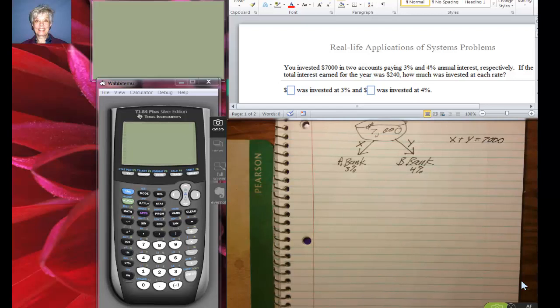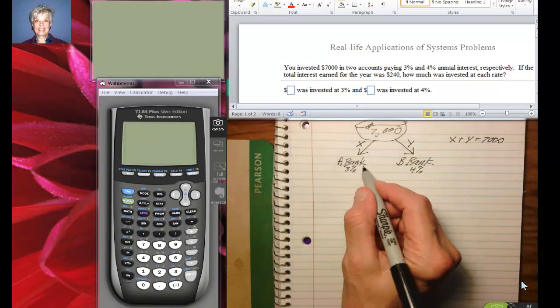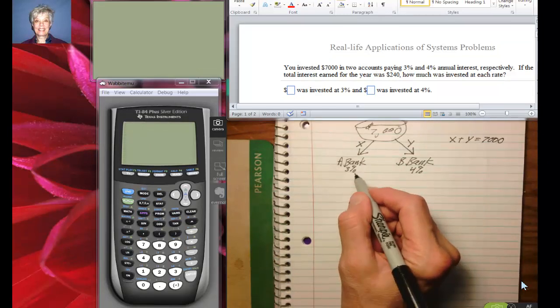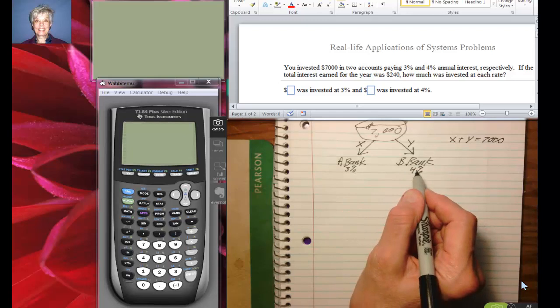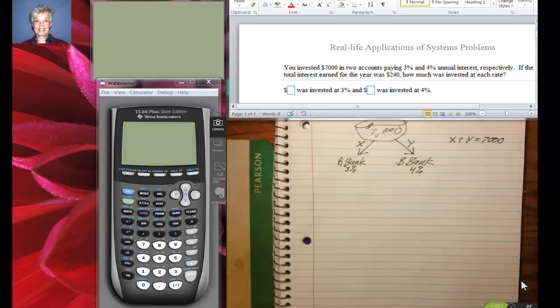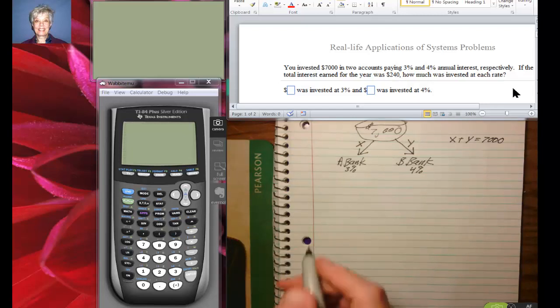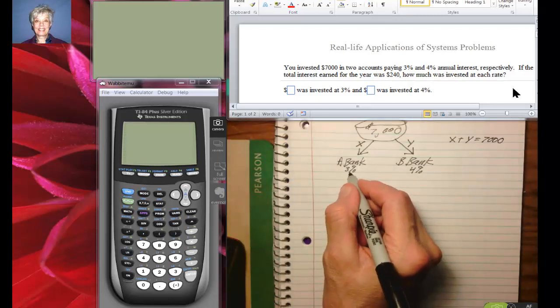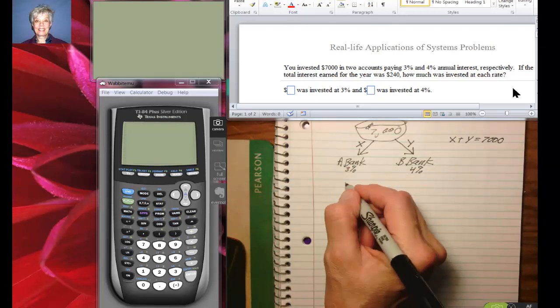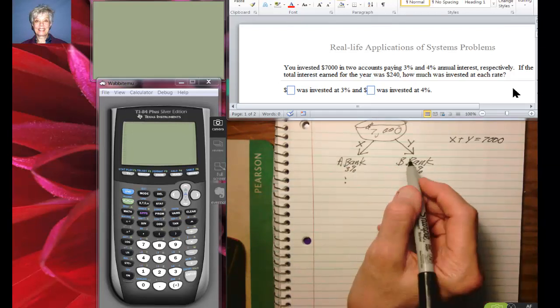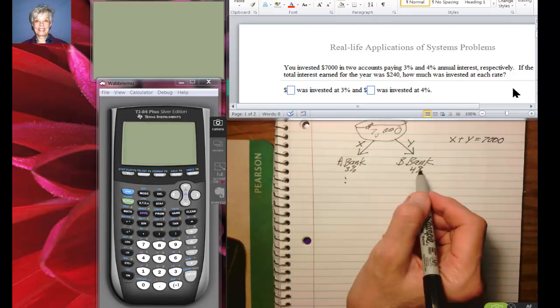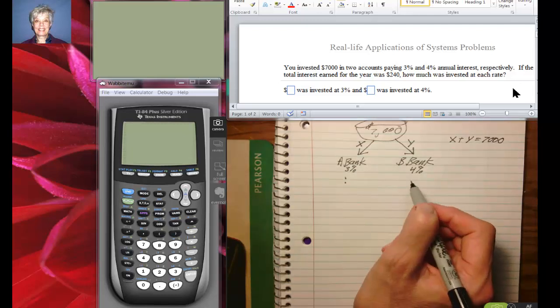Now what are we told? We're told that at the end of the year, your money in here which earned 3% plus your money in here which earned 4% is going to be worth $240. All right, the total interest earned. So what that means is 3% of this X dollars is going to be earned here, and 4% of this Y dollars is going to be earned here. How is it earned? The bank is paying you.